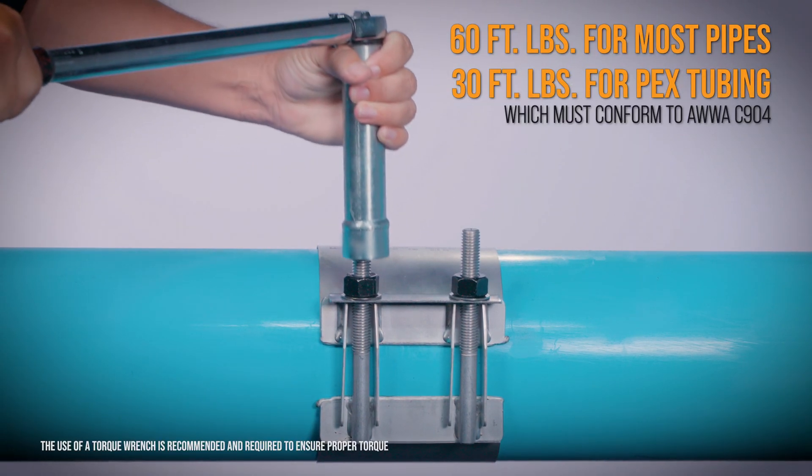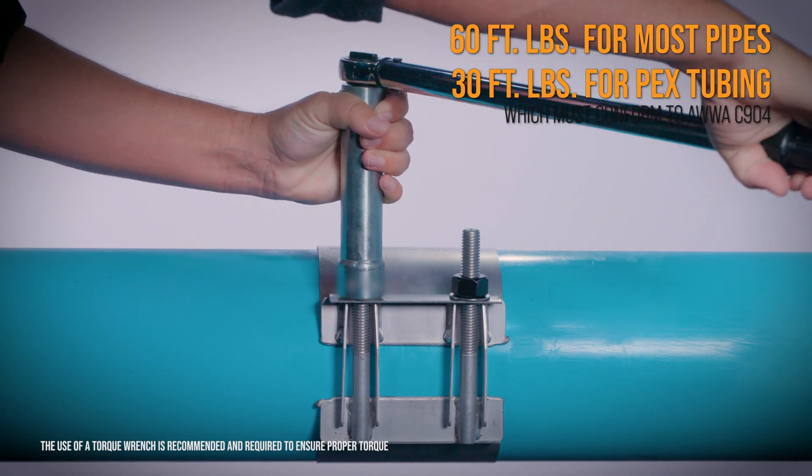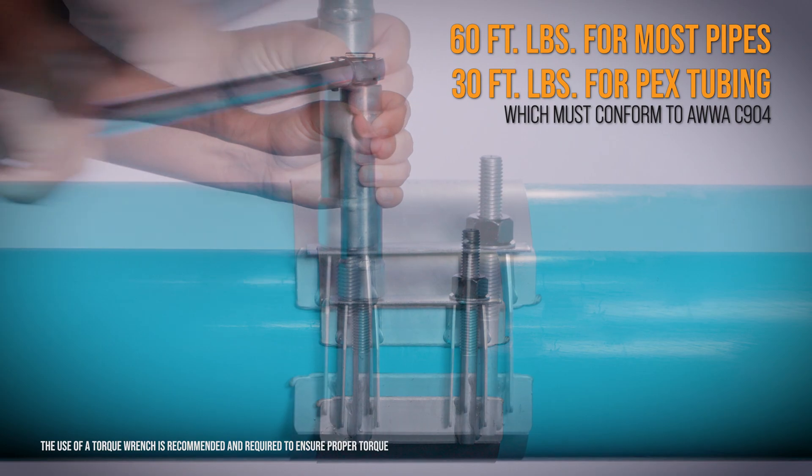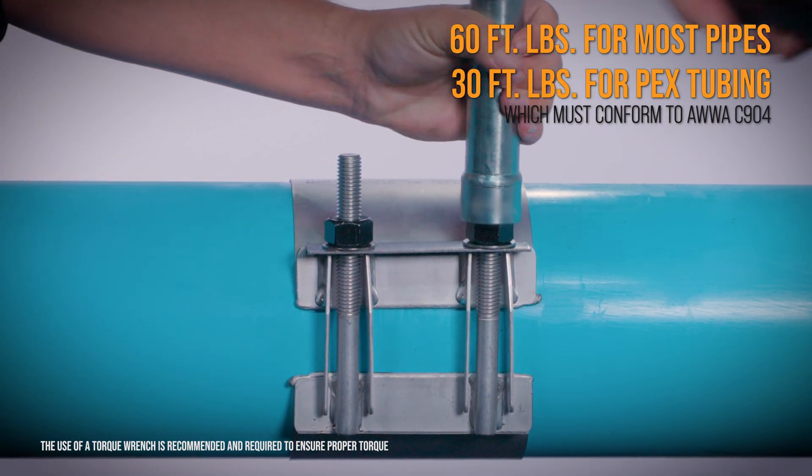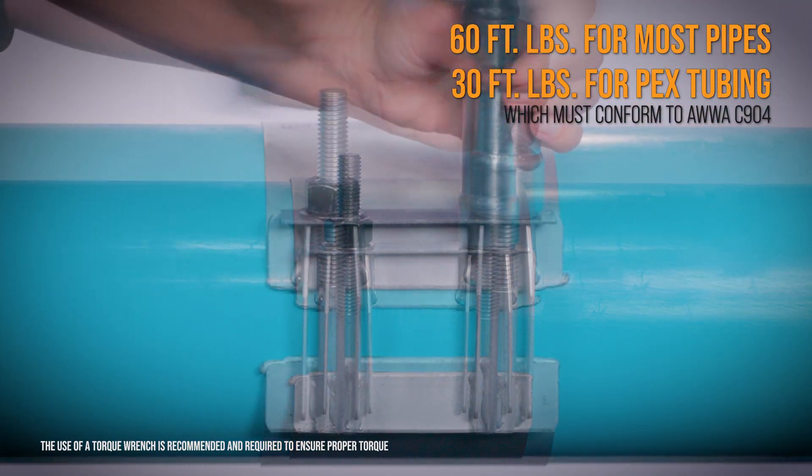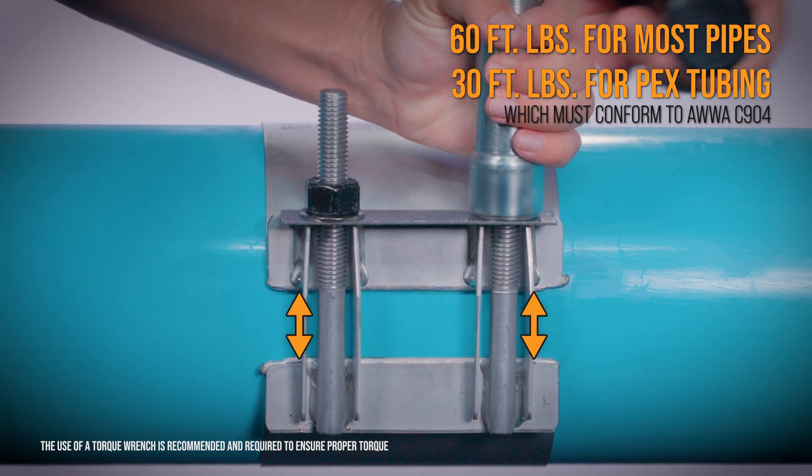Using a torque wrench, tighten all nuts and all sections of multi-section saddles evenly with incremental settings up to the recommended torque. Maintain even spacing between sections and from side to side.